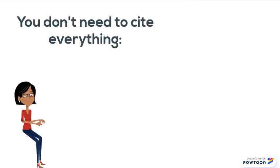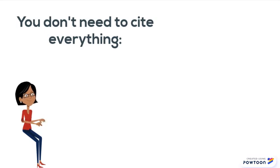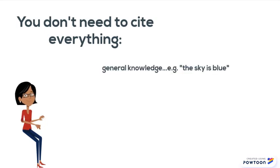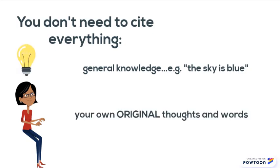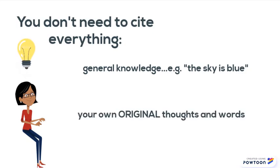Don't worry, you don't have to cite every word in your paper. For example, you don't have to cite statements of general knowledge. General knowledge is the sort of information that the average person would know, such as the sky is blue. You also don't have to cite your own original words or ideas.